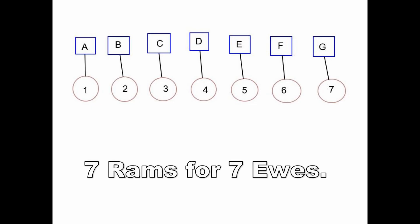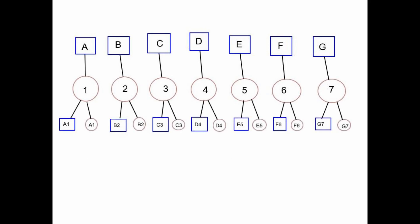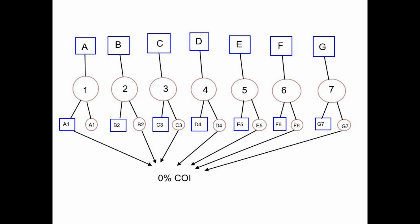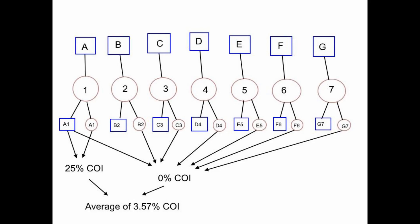So what happens if there are seven different rams for seven different ewes? With this setup, every set of twins is genetically diverse from every other set of twins. If ram A1 breeds with any female that is not his sister, he will produce offspring with a zero coefficient of inbreeding. There is one chance in seven that ram A1 could breed his own sister if left totally on his own, which would produce a 25% coefficient. But he has six out of seven chances of breeding with a ewe producing zero percent coefficient of inbreeding, giving an average of 3.57% coefficient of inbreeding for the flock.